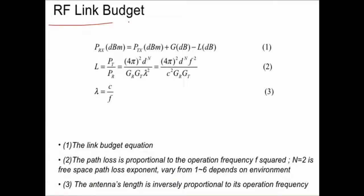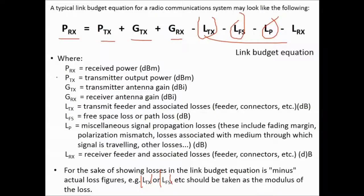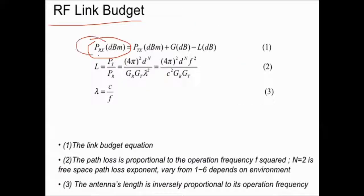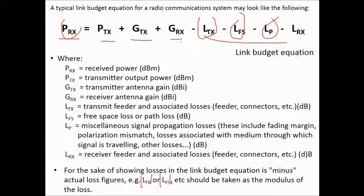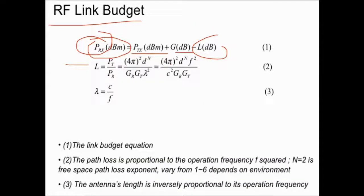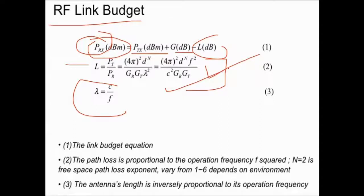This is also an example of an RF link budget. The received power (PRX) equals what is being sent plus the gains minus the losses. Path loss can be computed from the ratio PT/PR. Lambda equals c divided by f. The path loss is proportional to the operational frequency f squared when n equals 2, which is the free-space loss exponent. This exponent varies from 1 to 6 depending on the environment. The antenna length is inversely proportional to the operational frequency.